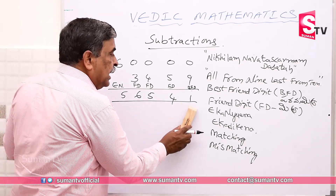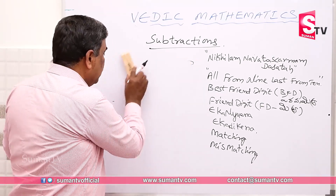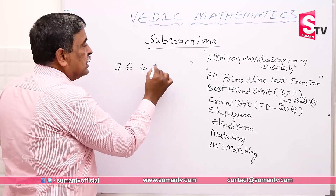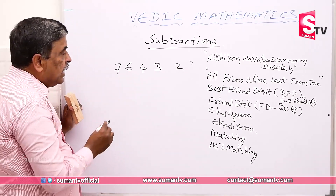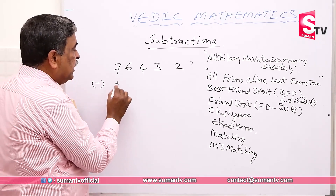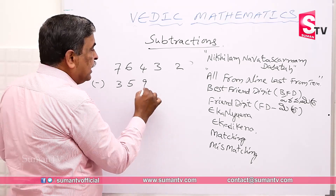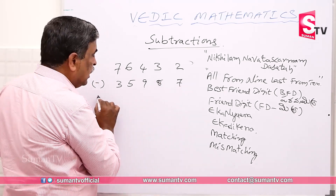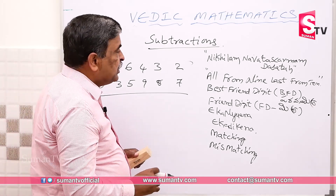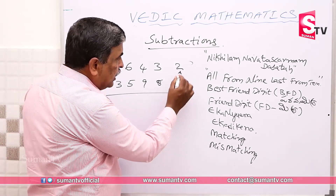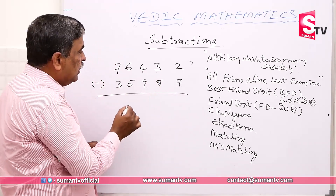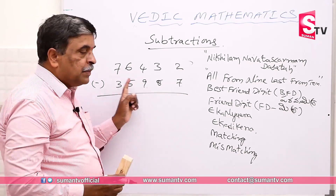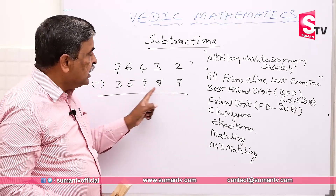Now we will handle mixed cases. We will have zeros in the same way. For example: 7, 6, 4, 3, 2 minus 3, 5, 9, 8, 7. One part is matching and one part is mismatching. Now these two are mismatching, this is mismatching, this is mismatching, this is matching, this is matching. First, we identify how many are matching and how many are mismatching.